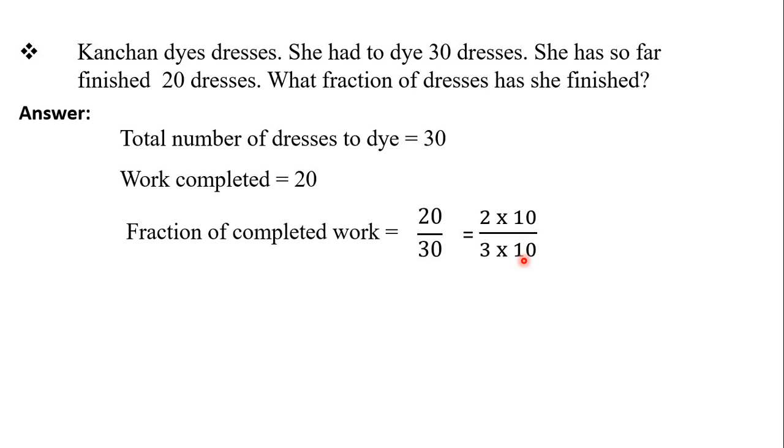This 10 or this 10 equal numbers, one in the numerator and other in the denominator, cancel ho jate hai. Ab aapke paas fraction bacha 2 upon 3. So what fraction of dresses has she finished? Hameh reduced form mein answer karna hota hai, yani ke simplest form mein. So our answer is 2 upon 3. Let's begin with the new question now.